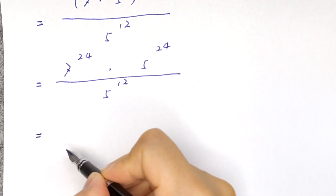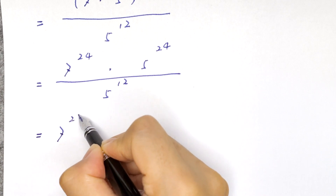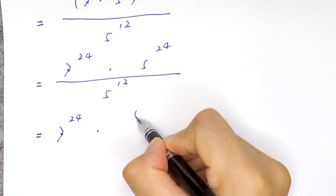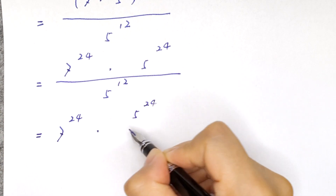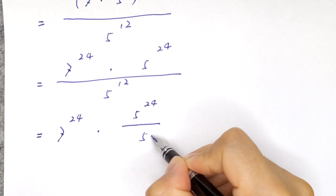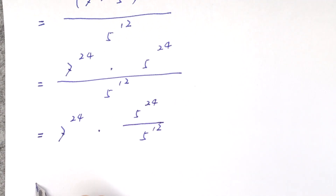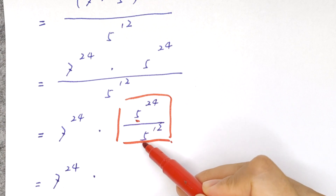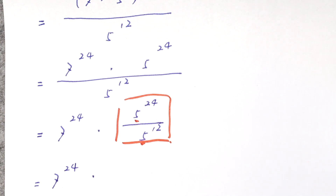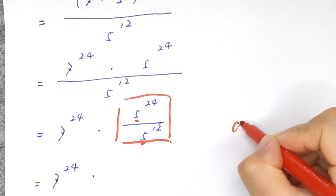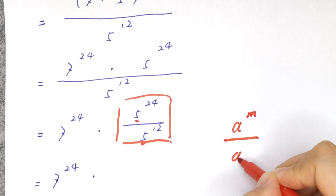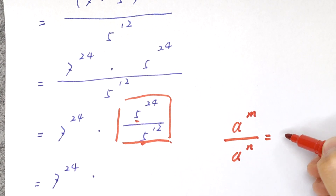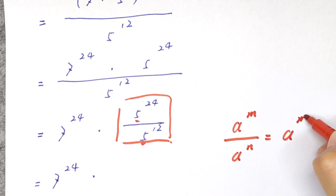It will be equal to 7 to the power of 24 times 5 to the power of 24 over 5 to the power of 12. In this part, 5 is common, so we will apply the formula: a to the power of m over a to the power of n is equal to a to the power of m minus n.